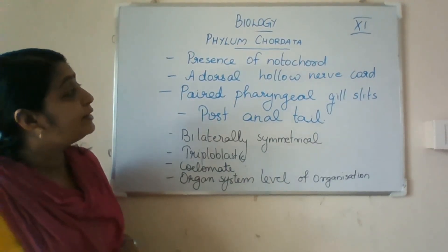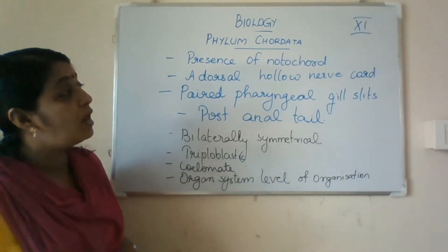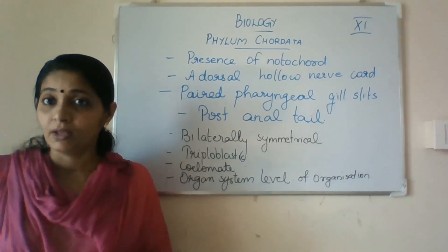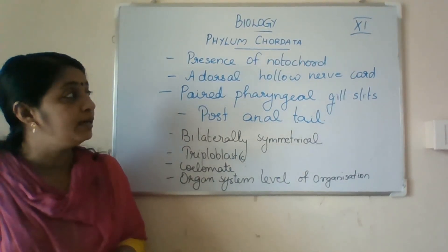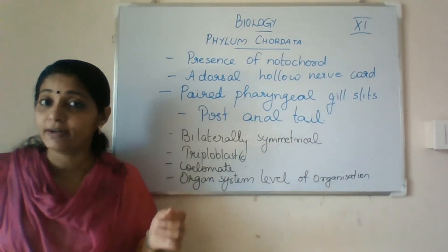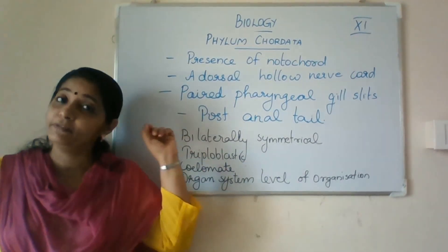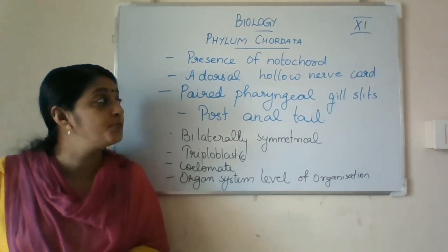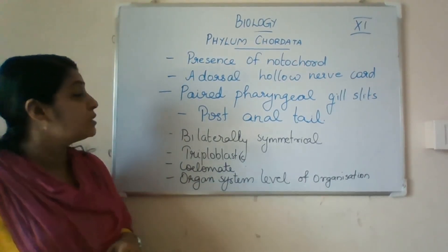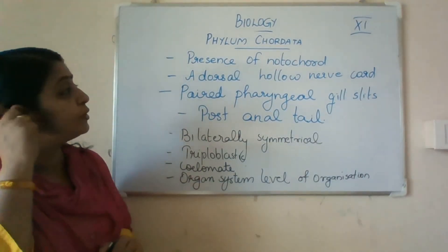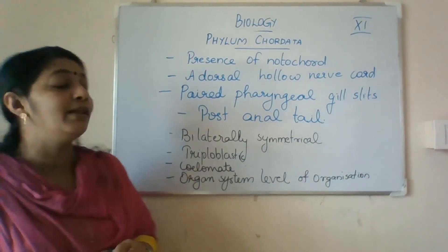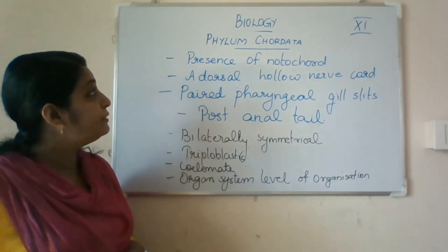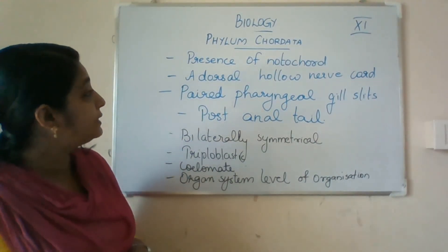The next feature is a dorsal hollow nerve cord. That nerve cord is actually a part of the central nervous system which later on develops to form the brain and the spinal cord. So the dorsal hollow nerve cord, which develops to form the brain and spinal cord, is another feature of Phylum Chordata.